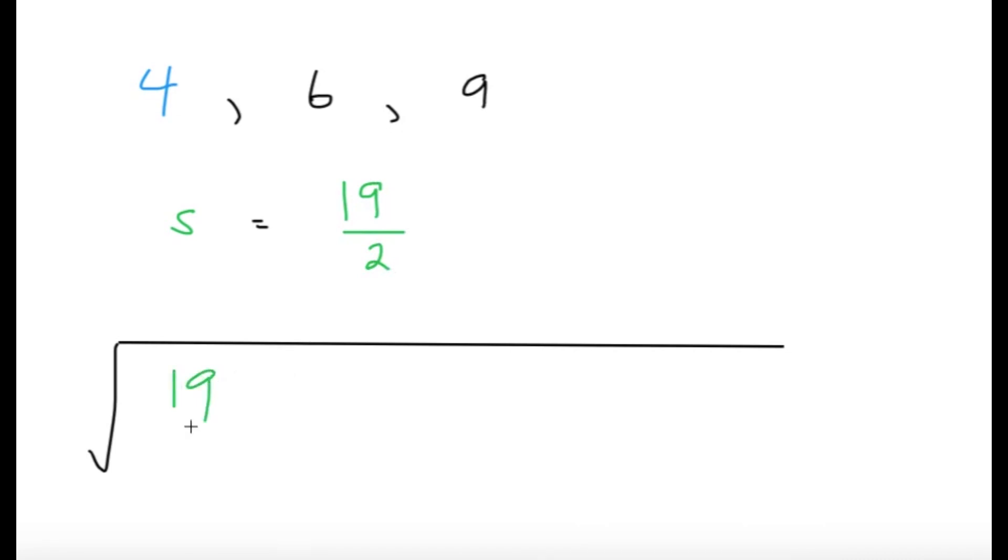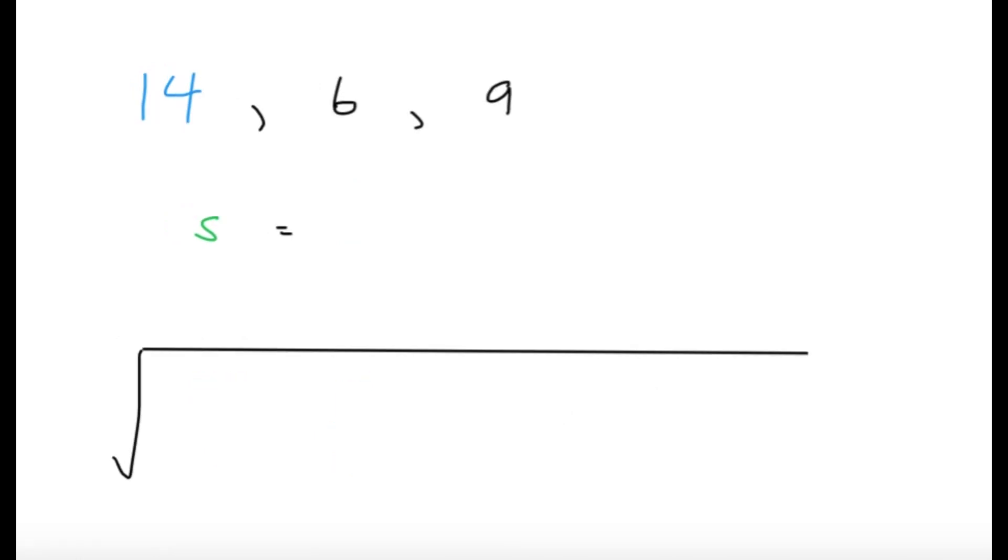So, we have from the Heron's formula, the semi-perimeter times S minus A, that's going to be 19 over 2 minus 4, that's going to be 11 over 2. Then, for the rest, 19 over 2 minus 6, that's equal to 7 halves, and then 19 over 2 minus 9, that's going to be 1 half. So, let's just not simplify it for now, and let's compare this with the other one.